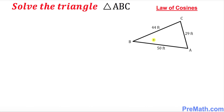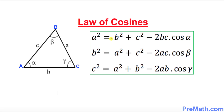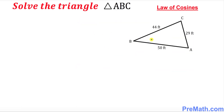Hello again everyone. In this video tutorial we are going to solve a given triangle ABC whose three sides have been given to us. When all three sides of a triangle are known, we can use the law of cosines to solve it. Solving a triangle means we need to calculate the missing angles. Here are the law of cosines formulas we'll be using during our calculations.